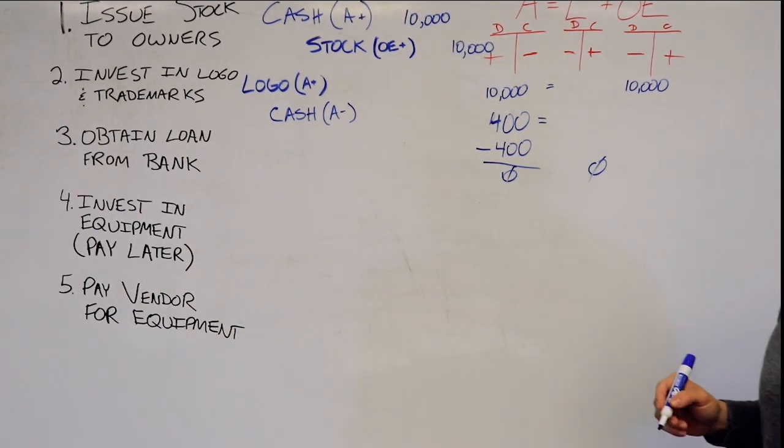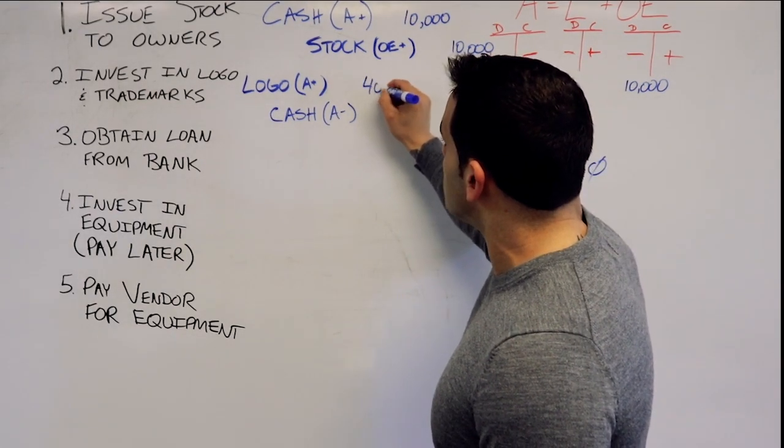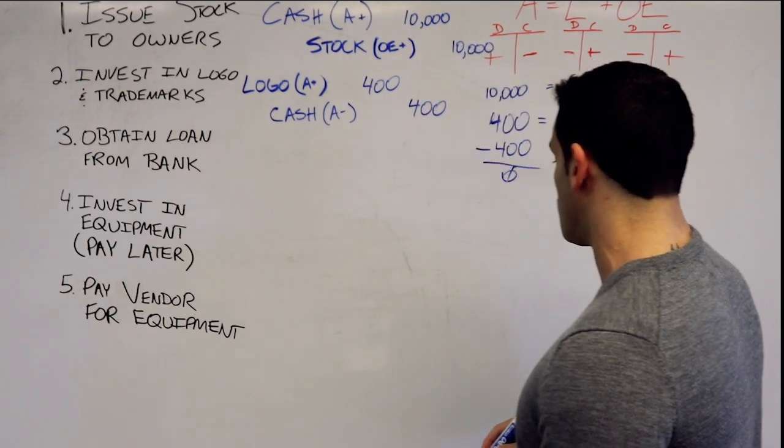And we have assets equaling liabilities plus owner equity. So we will debit logos for $400, and we're going to credit cash for $400 as well.